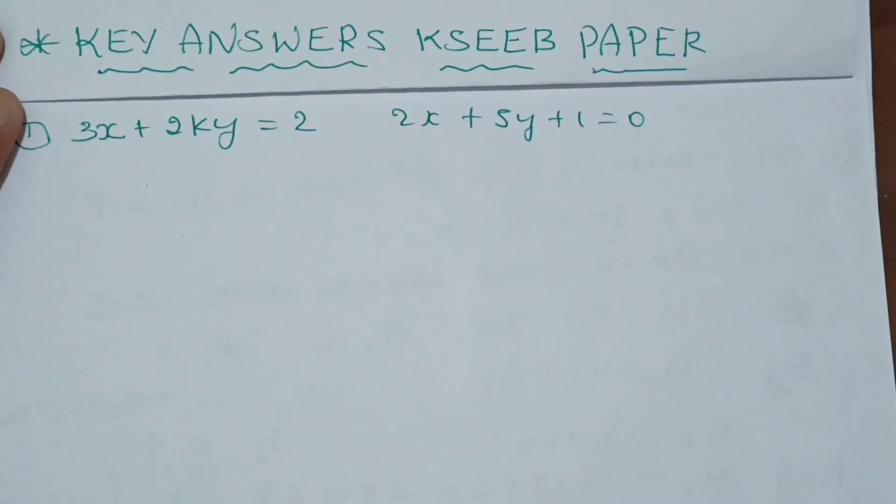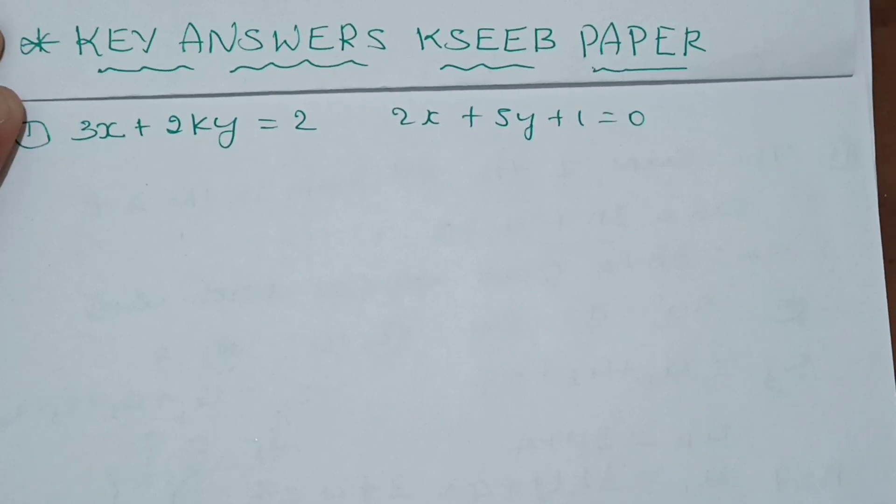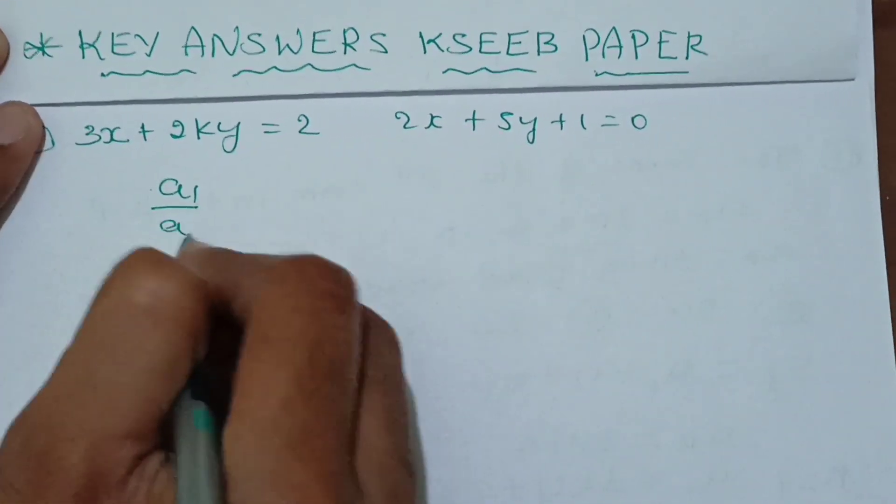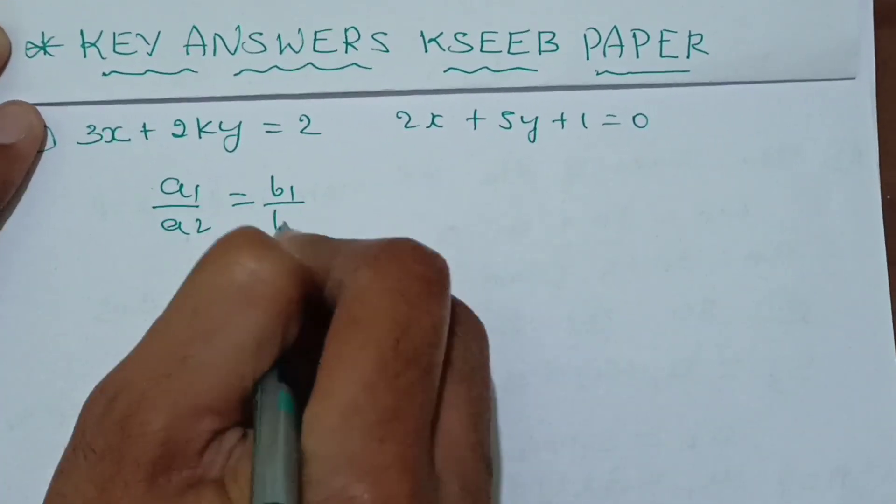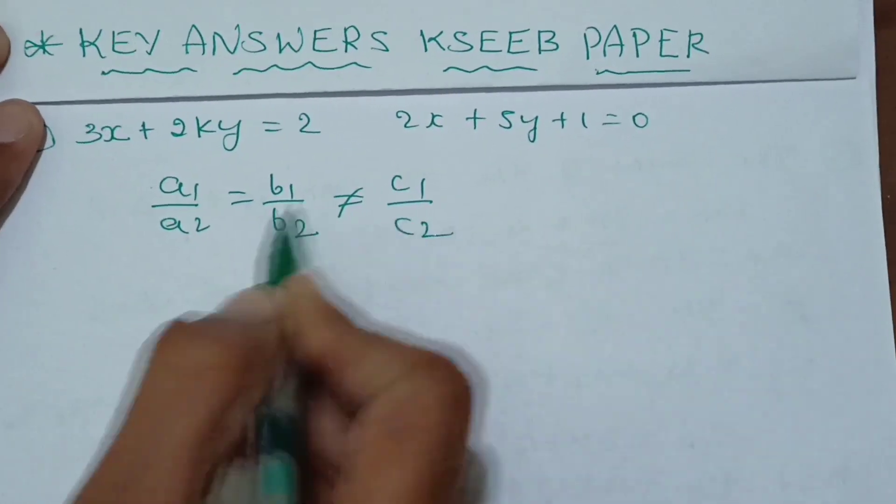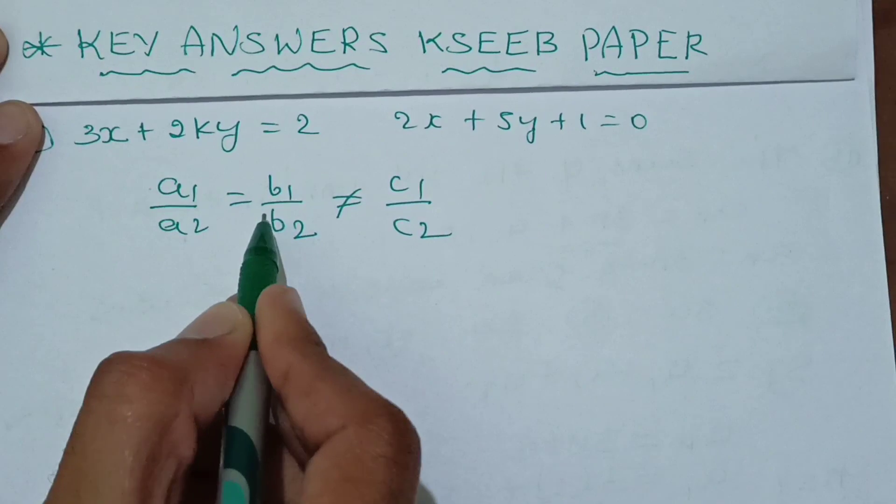A1 by A2, B1 by B2, C1 by C2. A1 by A2 is not equal to C1 by C2. But now we will take this much to find the value of K.